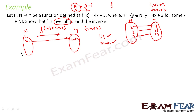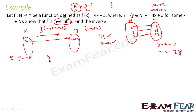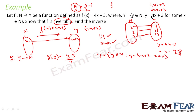Let us define a function g. Since f was from N to Y, g will be from Y to N. Here, if y = 4x + 3, then x = (y - 3) / 4. So I define function g from Y to N where g(y) = (y - 3) / 4, where y is a natural number following the pattern y = 4x + 3 for some natural number x.